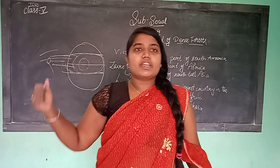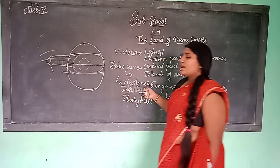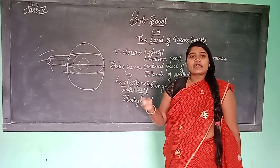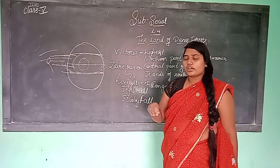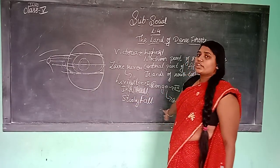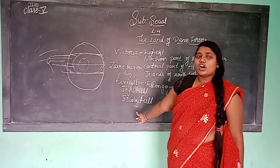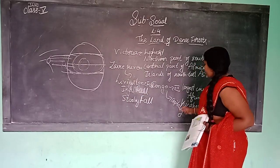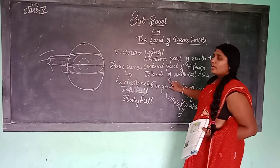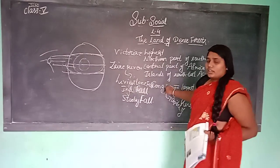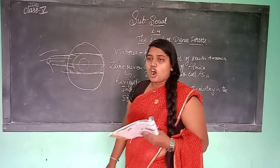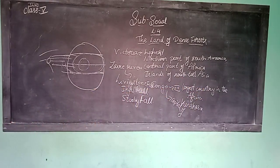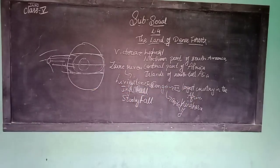The climate in the Congo region is ever hot and ever wet. It is very hot and rainy.